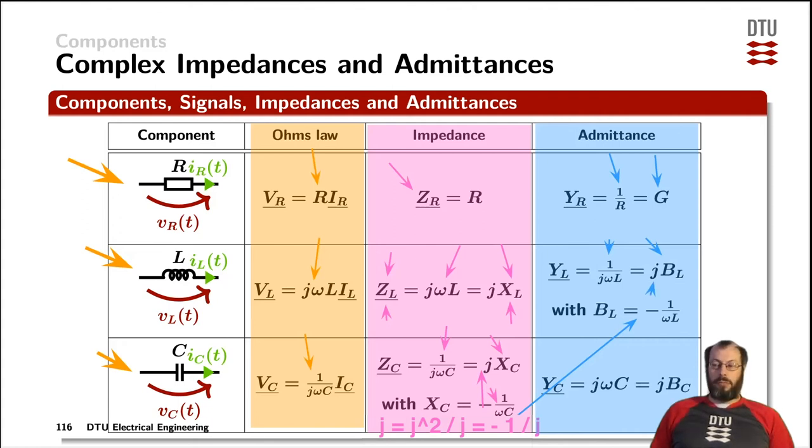The admittance of a capacitor is j times omega C, where omega C is the imaginary part of the admittance, which means it is the susceptance.